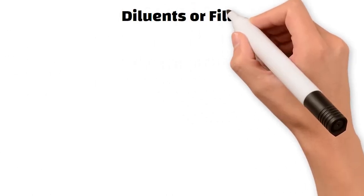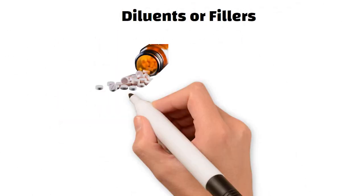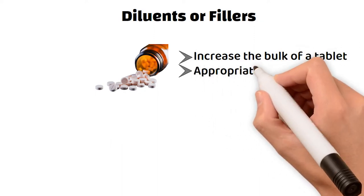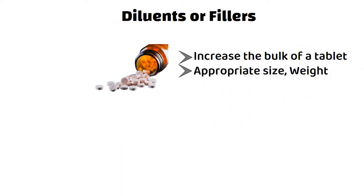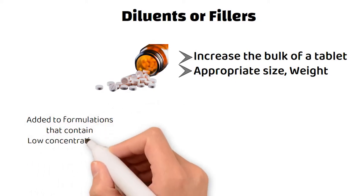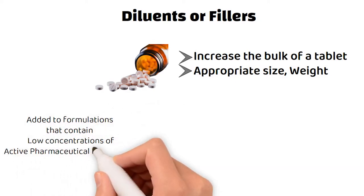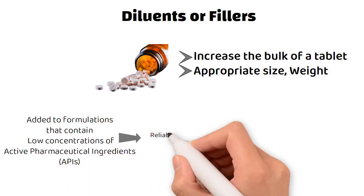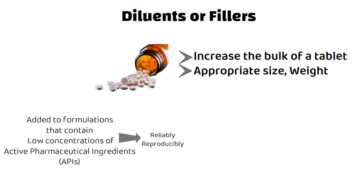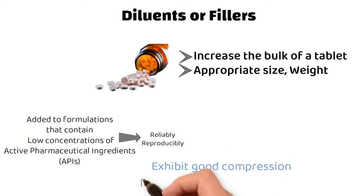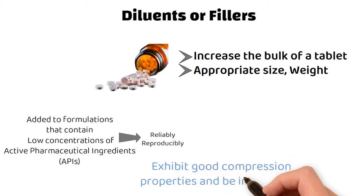We will start with diluents or fillers. These excipients are used to increase the bulk of a tablet and to ensure that it has the appropriate size and weight. They are typically added to formulations that contain low concentrations of active pharmaceutical ingredients (API) to ensure that the tablets can be manufactured reliably and reproducibly. As tablets are mainly produced by compression, diluents or fillers must exhibit good compression properties and be inexpensive.